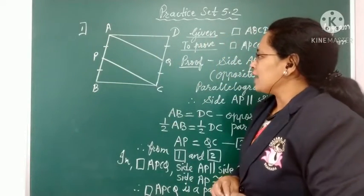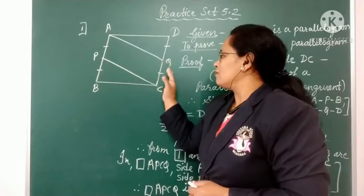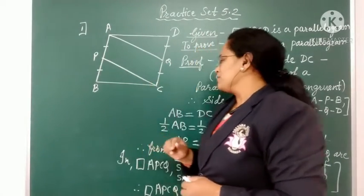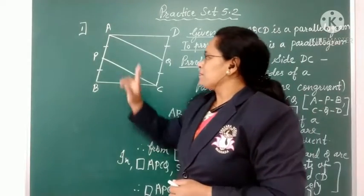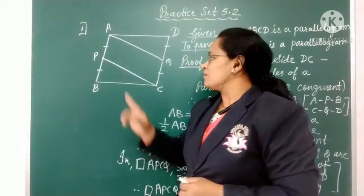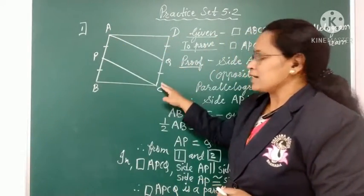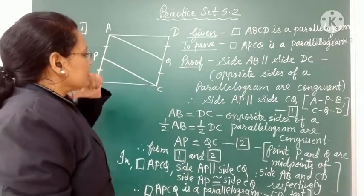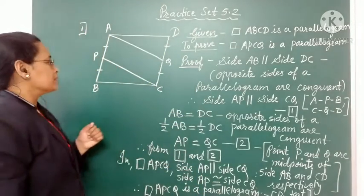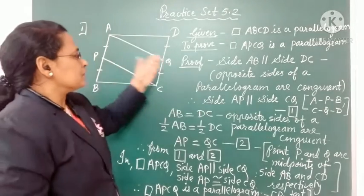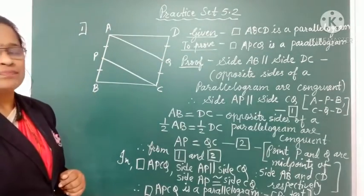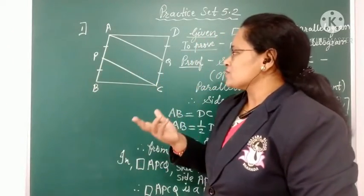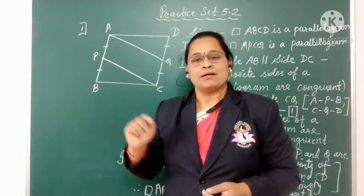As information about one pair of opposite sides of quadrilateral ABCD is given, we will make use of that. First, opposite sides of the parallelogram are congruent, therefore side AB is congruent to side DC. By the definition of parallelogram, a pair of opposite sides are parallel to each other. Here we consider the pair AB and DC.